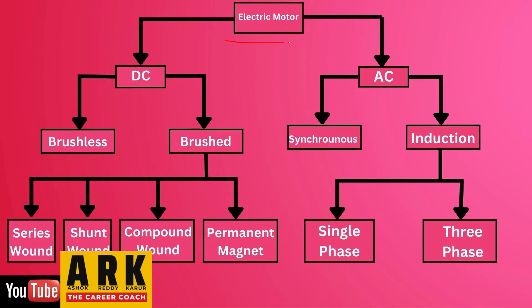So these are the electric motors used in the industry. As you see here, under electric motors you will get the DC motor and AC motor. DC means direct current, AC means alternating current.